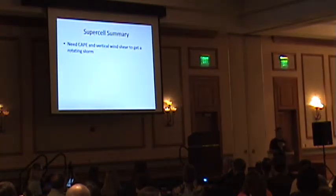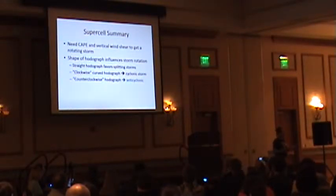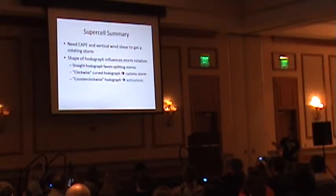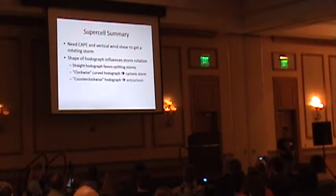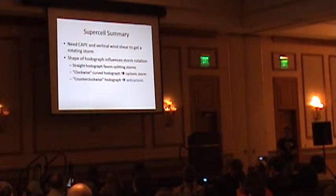Supercell summary: we've got to have deep vertical shear. The shape of the hodograph is what drives which storm wins - if it's cyclonic or anti-cyclonic. A clockwise curved hodograph with surface-based storms gives you a cyclonically rotating storm immediately. A counter-clockwise hodograph gives anti-cyclonic, but mostly you'll see anti-cyclonic rotation with storm splits on a straight hodograph. Those are the two most common scenarios.